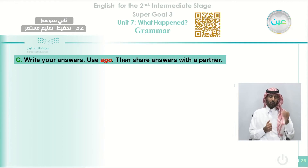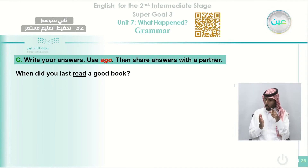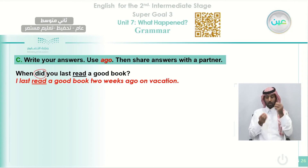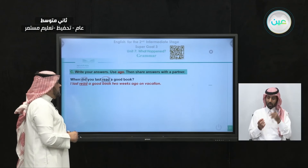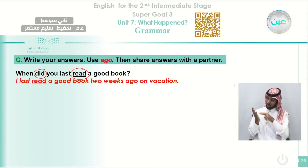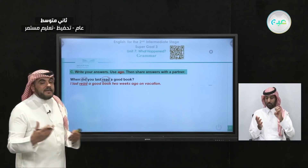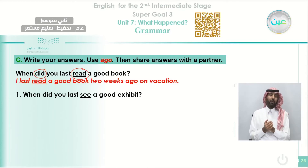Let's answer Exercise C — write your answer using 'ago,' then share answers with a partner. 'When did you last read a good book?' I last read a good book two weeks ago on vacation. Notice that when we use 'did,' the verb stays in infinitive form, but in the answer without 'did,' we use the past form. 'Read' is spelled the same in present and past, but pronounced differently — 'read' in the present, 'red' in the past, like the color red.